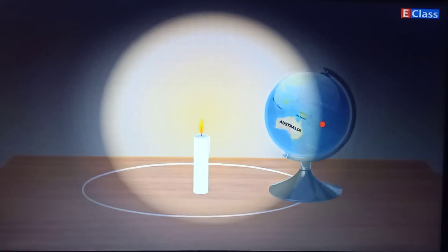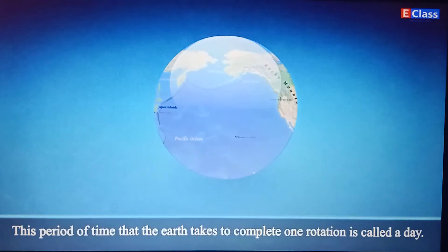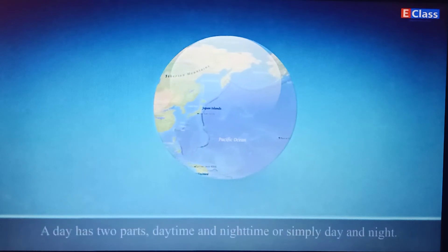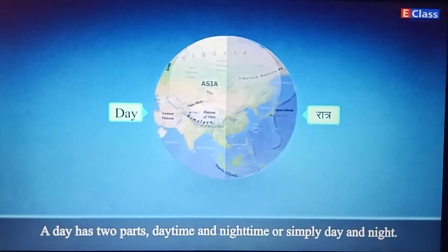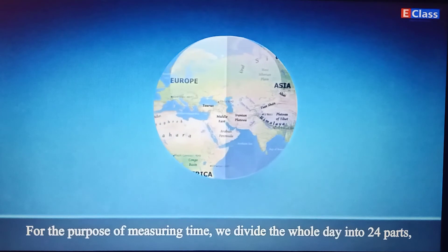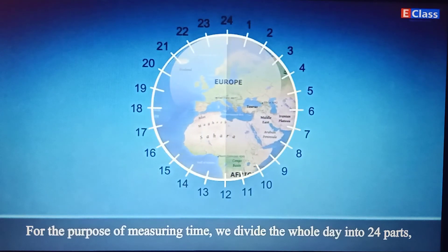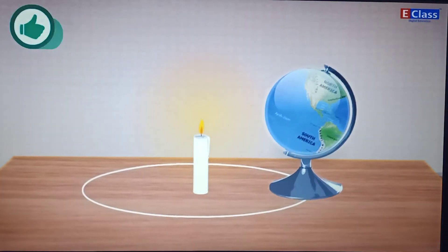After one sunrise, note when the next one occurs at the bindi. You will see that this happens when the Earth completes one rotation — one complete turn around itself. This period of time is called a day. A day has two parts: daytime and nighttime, or simply day and night. For measuring time, we divide the whole day into 24 parts, each called an hour.